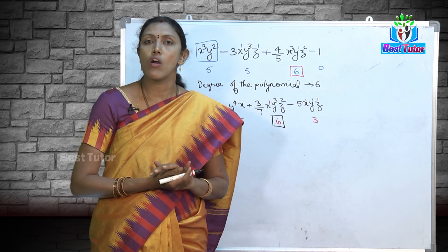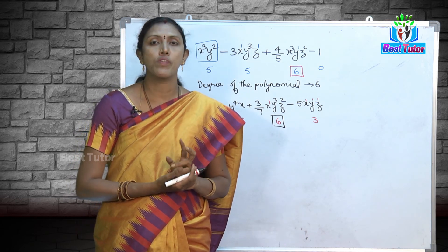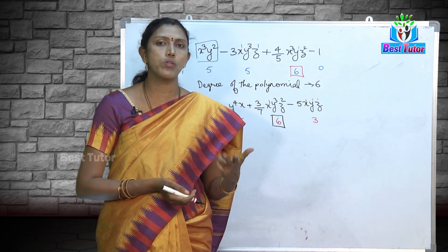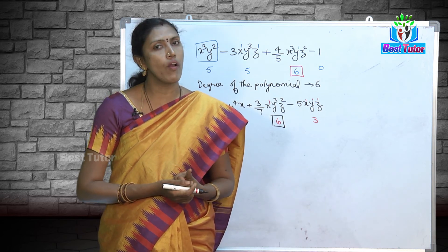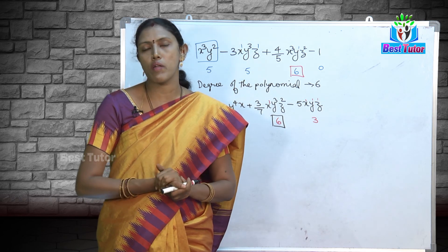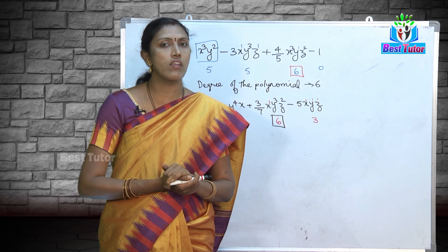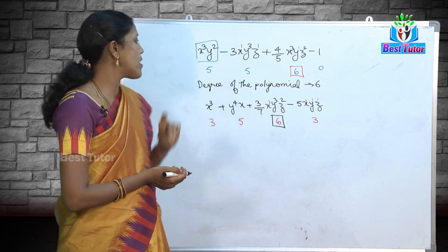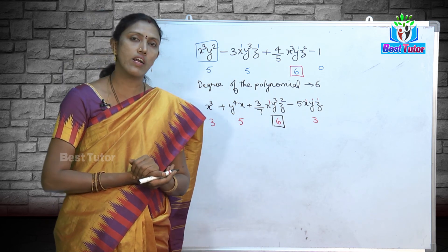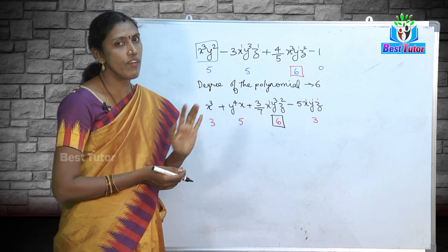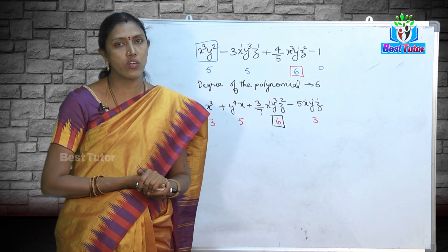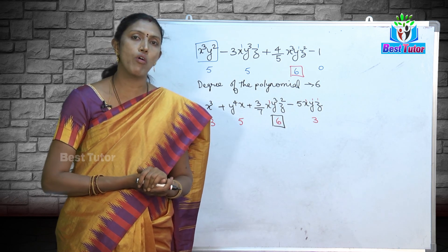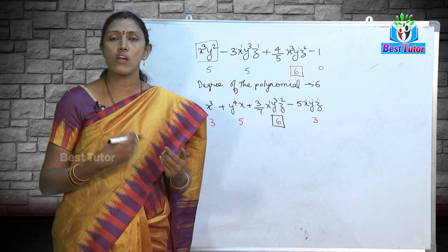In today's video we have learnt about all the algebraic expressions — particularly monomial, binomial, trinomial, and multinomial — consisting of 1 term, 2 terms, 3 terms, and more than 3 terms respectively. A polynomial is an algebraic expression where we are not just counting terms, but ensuring that none of the variables have a negative power. We also learnt how to find the power of each term and then the degree of the polynomial. We are going to learn in detail about all the operations on algebraic expressions in the coming videos. Thank you.